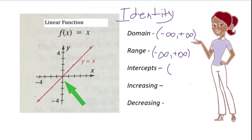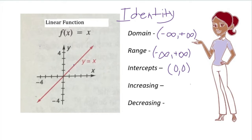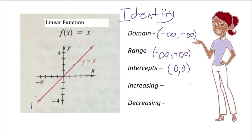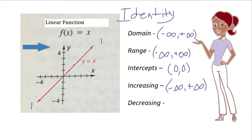Likewise, for the range we go from the bottom to the top along the y-axis — again, negative infinity to positive infinity. The intercept is where it hits the y and x-axis, so that would be (0, 0). To tell whether it's increasing, we start at the bottom going to the top, and we can see it is increasing from negative infinity to positive infinity. It is not decreasing.